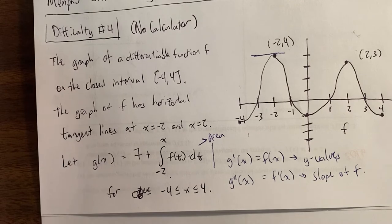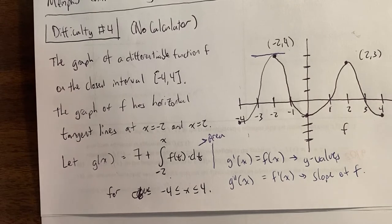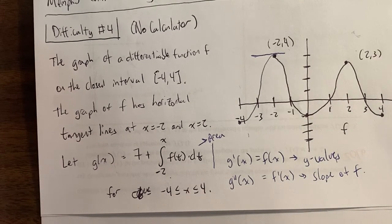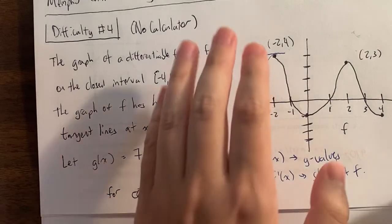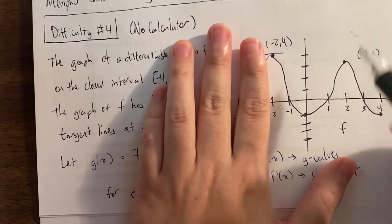I want to mention something from difficulty number 2. Let's say we were actually finding g values that were not negative 2 — for example, g of 2.